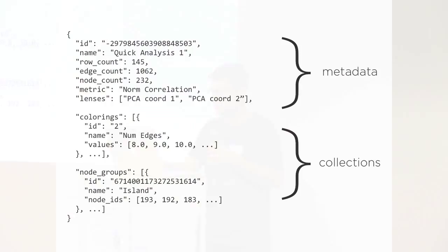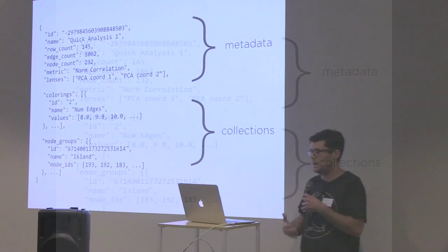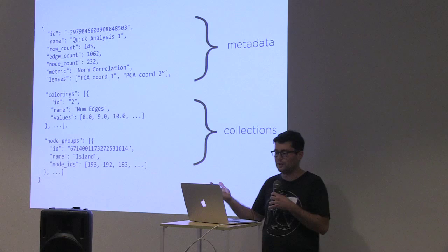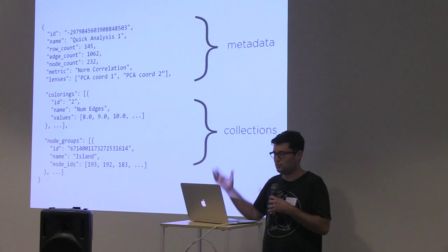So what does that look like at the JSON level? We're pulling down from our API some metadata about the network, and we also include some sub-collections with associated elements — things like the ID, the name, some configuration properties for generating the network, and then child collections and their properties.